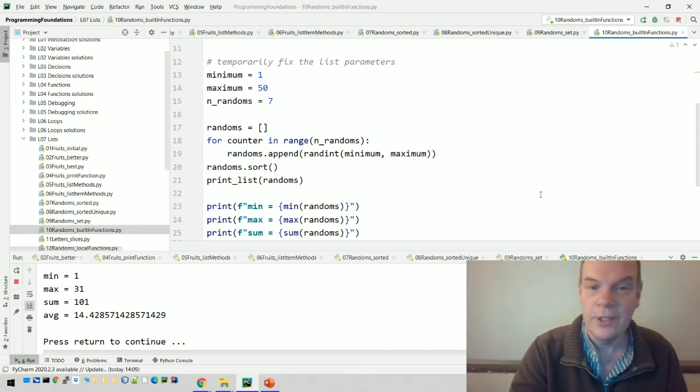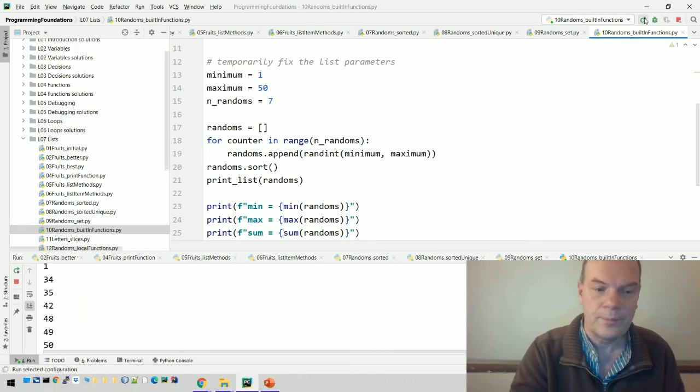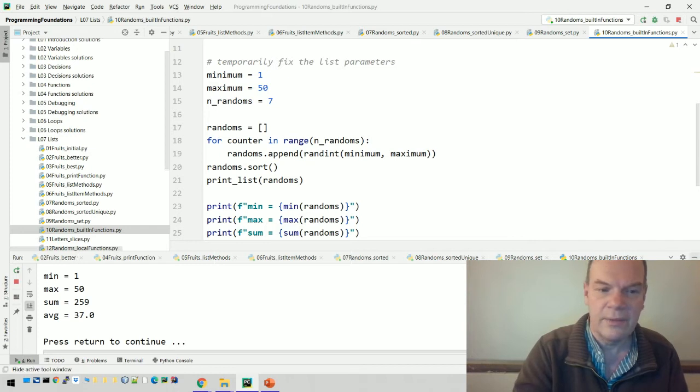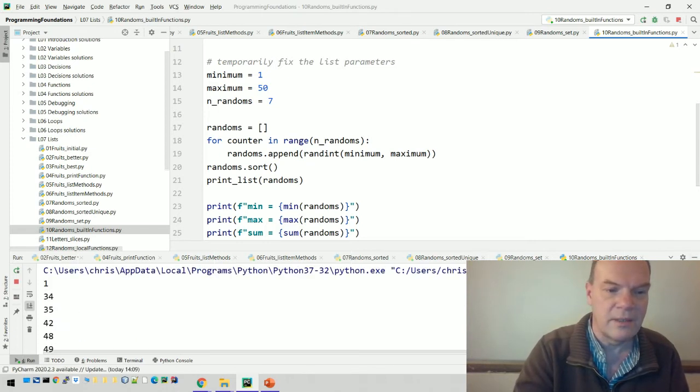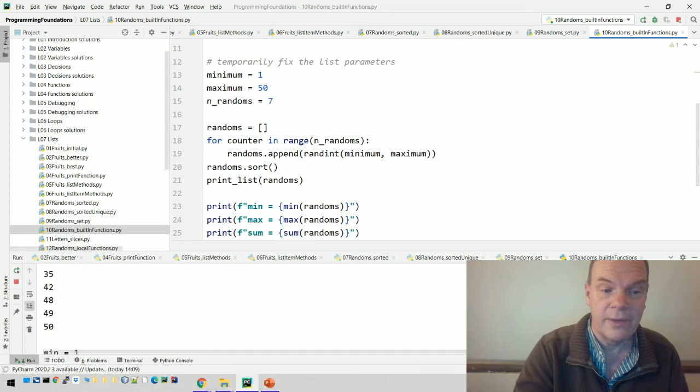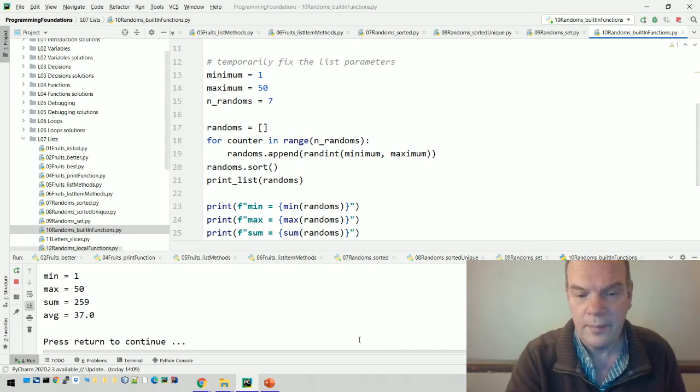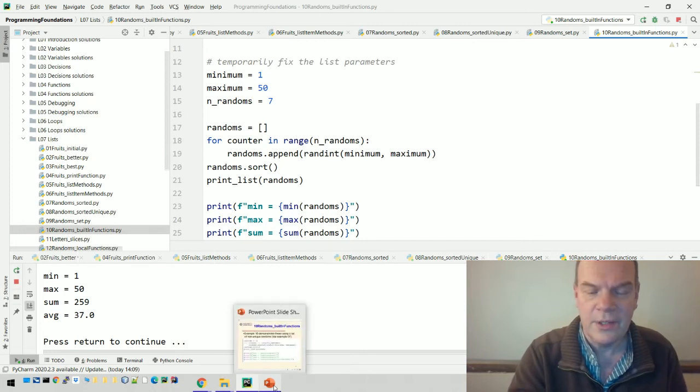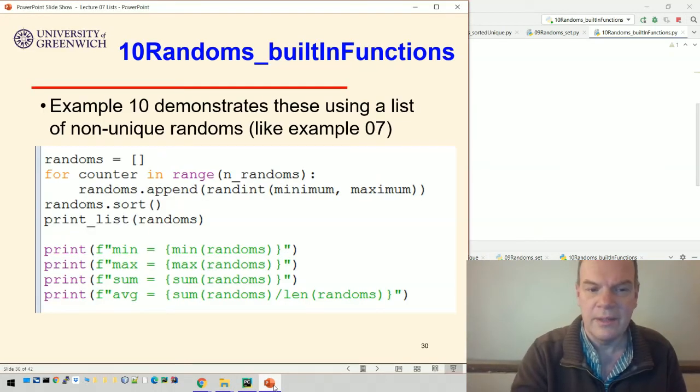If you add them all up, apparently you get 101, and if you take the average, then you get 14.42. I run that again, get a different value. So in this case, the numbers are much higher, see 134, 35, and the average is 37.